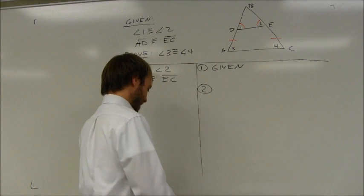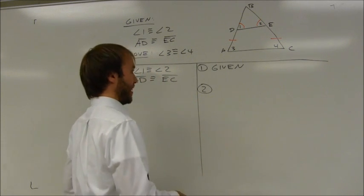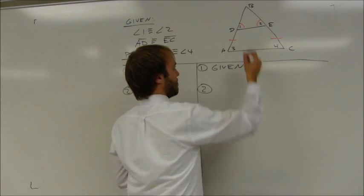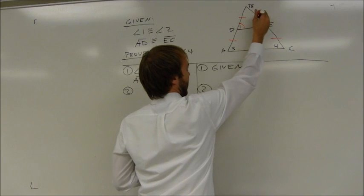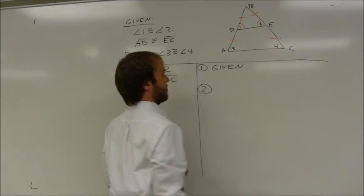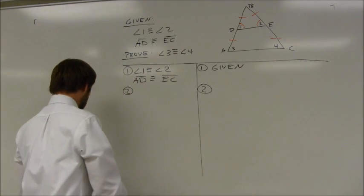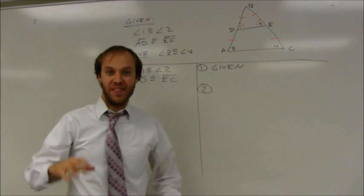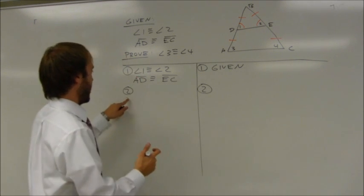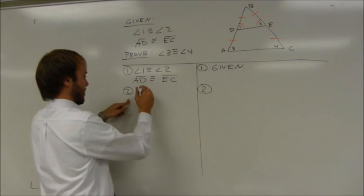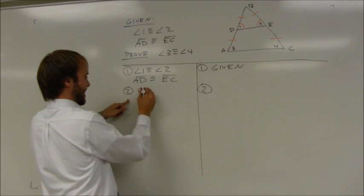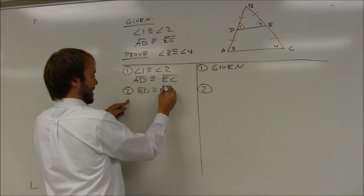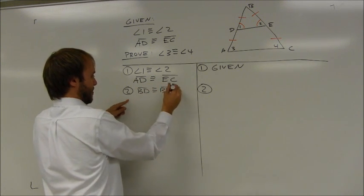So if you take a look at my diagram here, we can see two congruent angles in a triangle. I immediately want to state that segment BD is congruent to segment BE. More often than not, that's going to be a huge part of the proof. So I'm going to add that — BD is congruent to BE.